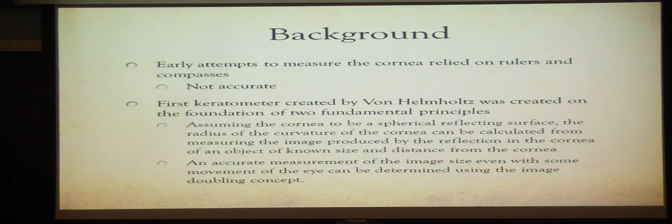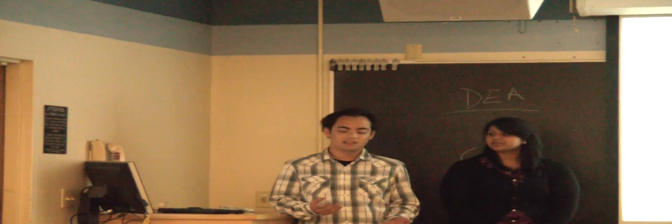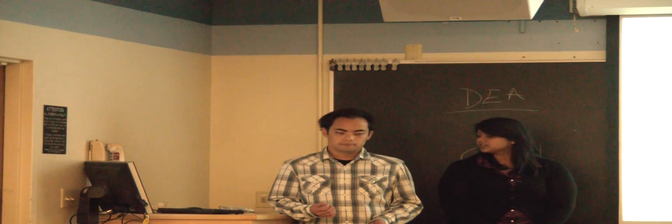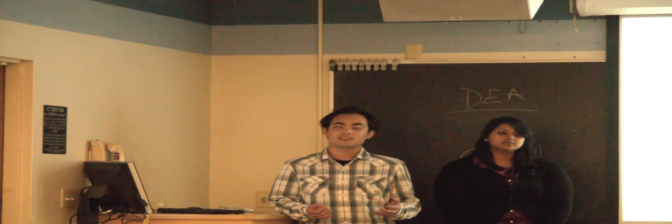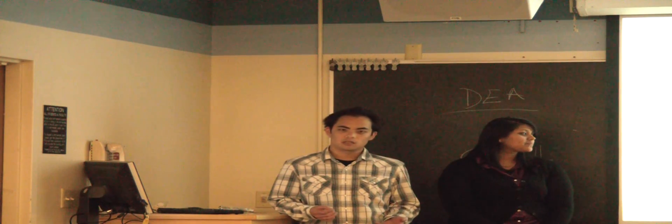The first principle being that the cornea was assumed to be a spherical reflecting surface, and the radius of curvature of the cornea can be calculated by measuring the image produced by the reflection in the cornea, along with the known distance from the cornea. Basically you can treat the cornea as a spherical reflecting surface, and you can easily determine the radius of curvature of the cornea by using laws of reflection and similar triangles.